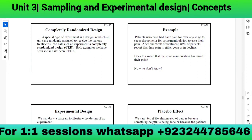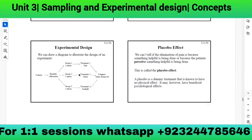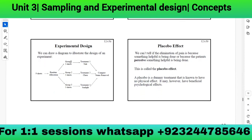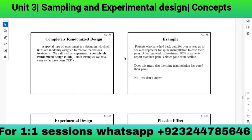A completely randomized design (CRD) is a special type of experiment in which all units are randomly assigned to receive the various treatments. Both examples we have seen — the detergent and weight loss experiments — are CRDs. We can draw a diagram: for the nine sheets, randomly allocate three to each group, give one treatment to each group, then compare stain removal results.